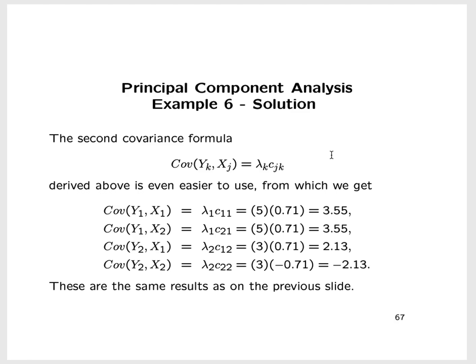Using the more abbreviated formula λ_k · c_jk: the covariance between y1 and x1 is λ1 · c_11 = 5 × 0.71 = 3.55. The covariance between y1 and x2 is λ1 · c_21 = 5 × 0.71 = 3.55. The covariance between y2 and x1 is λ2 · c_12 = 3 × 0.71 = 2.12. These are the same results as the previous formula.